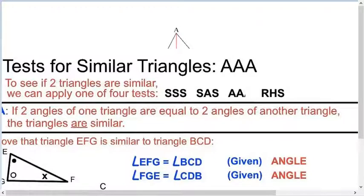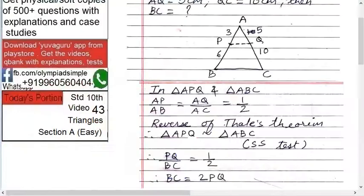PQ upon BC equals to 1 upon 2. Because when two sides are in the same relation then the third will be in the same relation. So BC equals to 2PQ. That's the required answer. If PQ is given then you will find the answer, otherwise leave it.